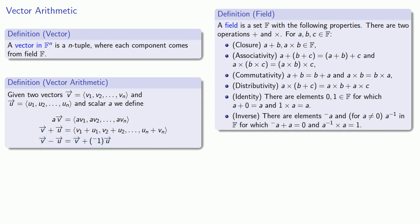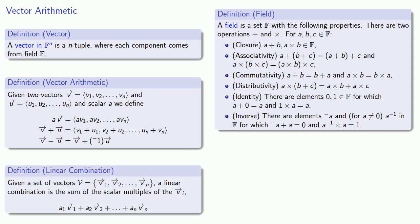Because we can add scalar multiples of vectors, and because anything we do once we can do as many times as we'd like, we can form a linear combination of vectors — a sum of scalar multiples of vectors.